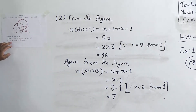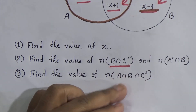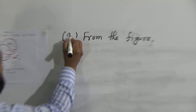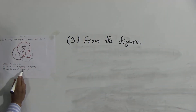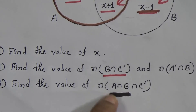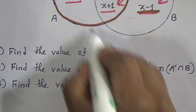Now I'm going to solve Activity 3: find the value of n(A∩B∩C'). We have three sets — A intersection B intersection C prime. First, let's identify A∩B: the common elements of sets A and B. Set A is the left circle and set B is the right circle. Their common region contains elements 3 and (x+1).